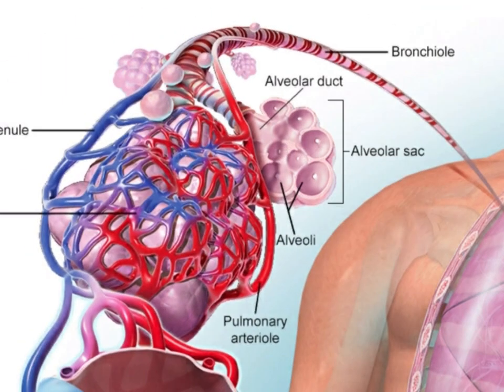If you'll follow along in the illustration, you can pick up where we left off at these tiny non-cartilaginous bronchioles, which begin to continue dividing into what are seen here as alveolar ducts. The alveolar duct gives way to this cluster known as an alveolar sac, containing many individual sacs known as alveoli.